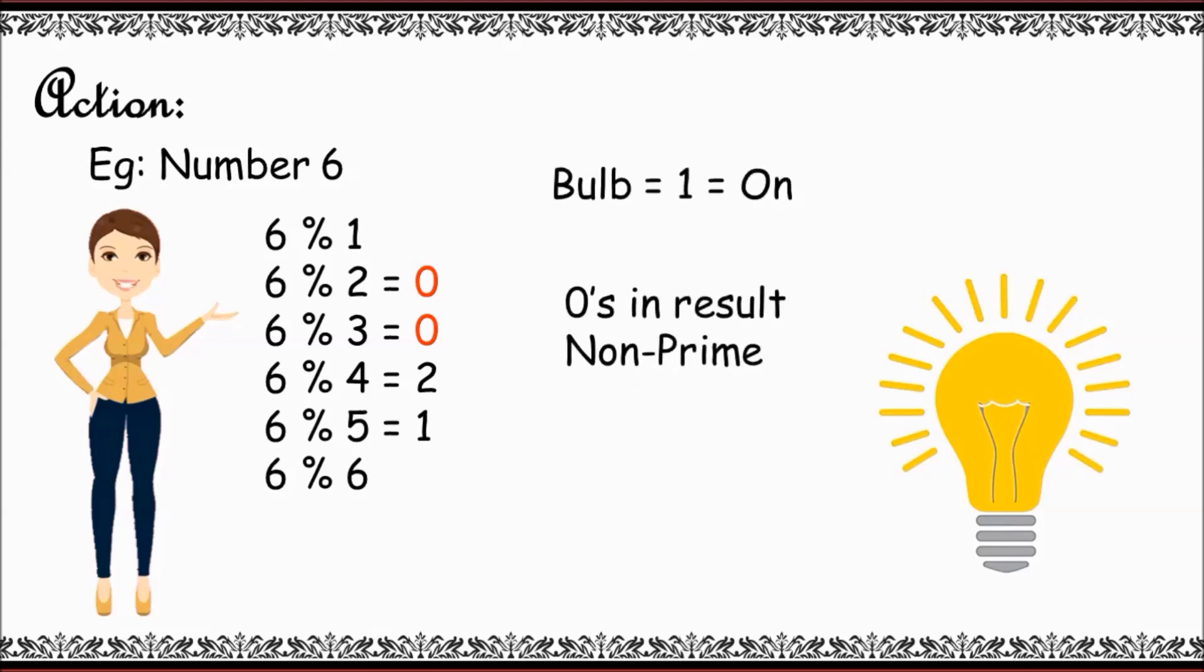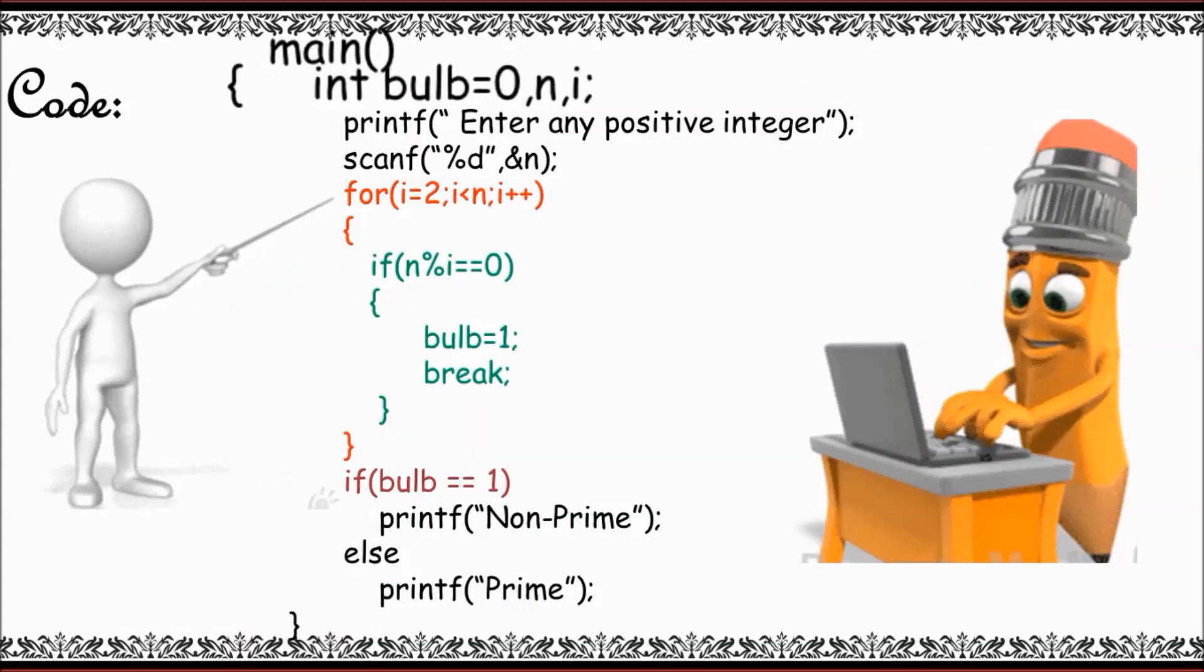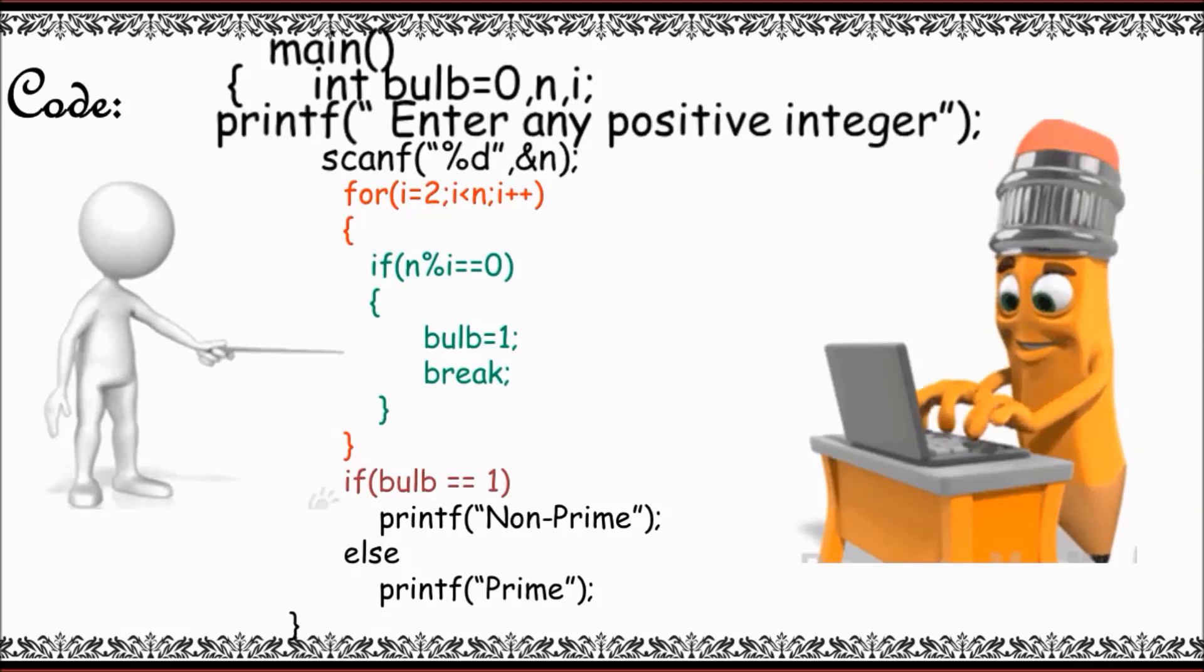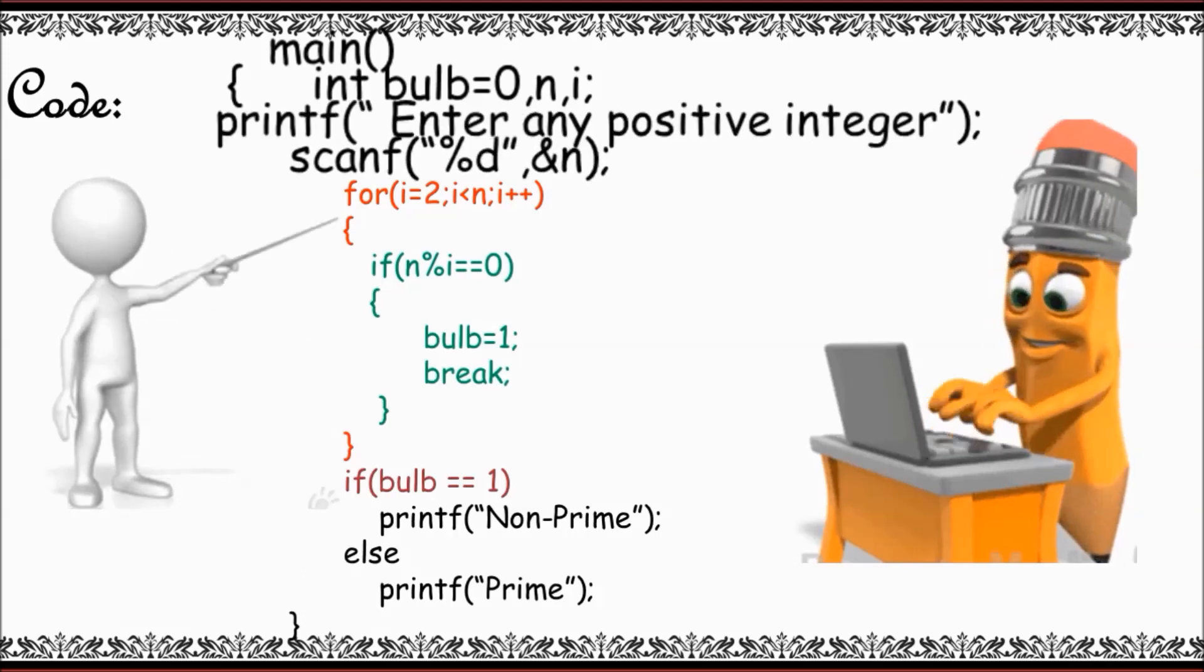So let's take the help of a program to explain this. Here I am having three variables: bulb equals 0, which is in off state, and number n. Next, I will be entering any positive integer with the help of n. See here, this is the main concept that you have to observe in this particular loop.